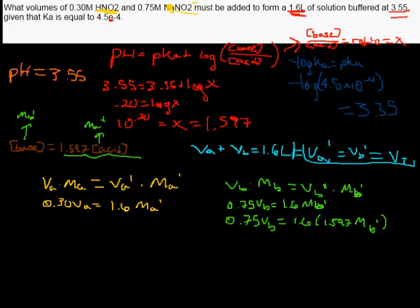We were going, and the last time, we were talking about how we were trying to figure out the total volumes of nitrous acid and sodium nitrite. Got it this time! So sodium nitrite must be added to form 1.6 liters of solution buffered at 3.55 pH, given that the K of A is that.